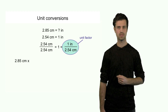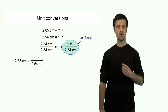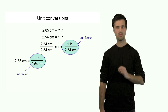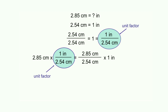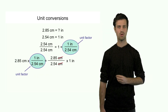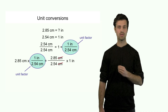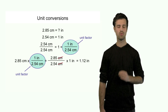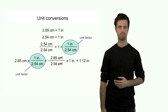So 2.85 centimeters — if I multiply that with this unit factor, I notice that the centimeter unit can cross out. Centimeter appears both in the numerator and in the denominator, which means I can cross it out. When you cross that out, your answer is expressed in the remaining unit, which is inches. So in this case, if you divide 2.85 by 2.54, times 1 inch, you'll find 1.12 inches. I've completed my conversion using the unit factor.